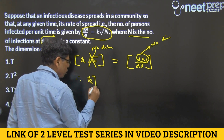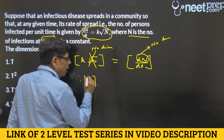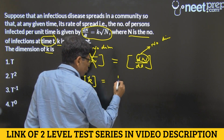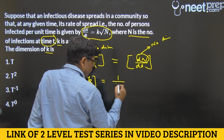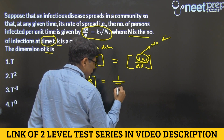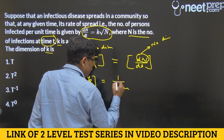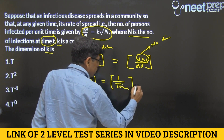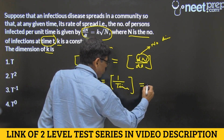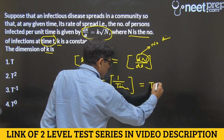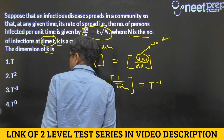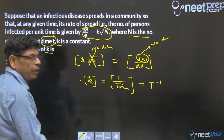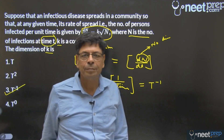Therefore, the dimensions of K are the dimensions of 1 divided by time, which is T to the power minus 1. So option 3 is the answer.